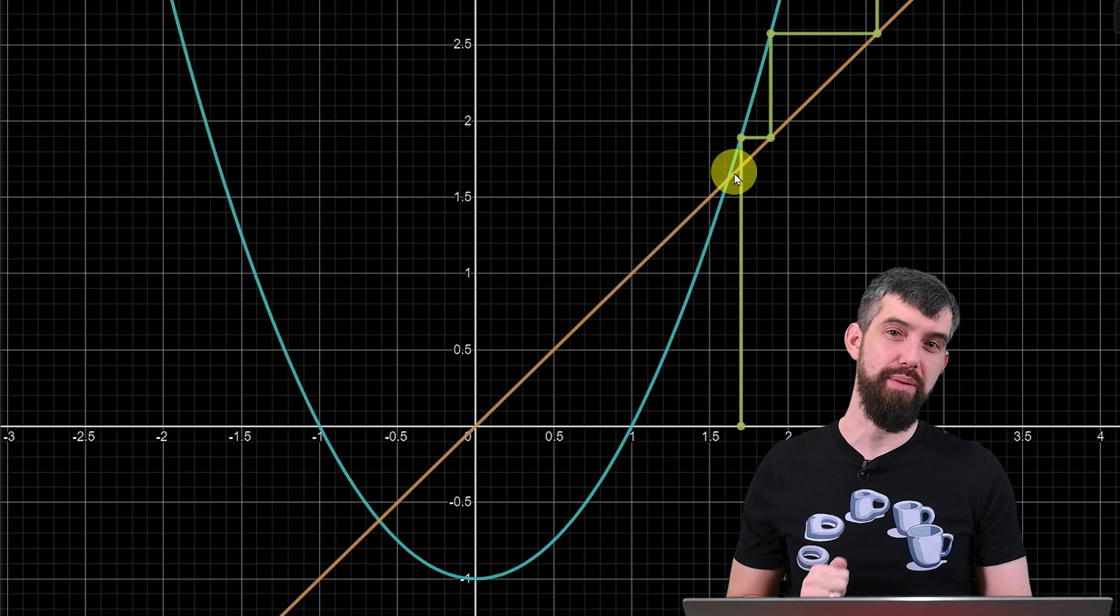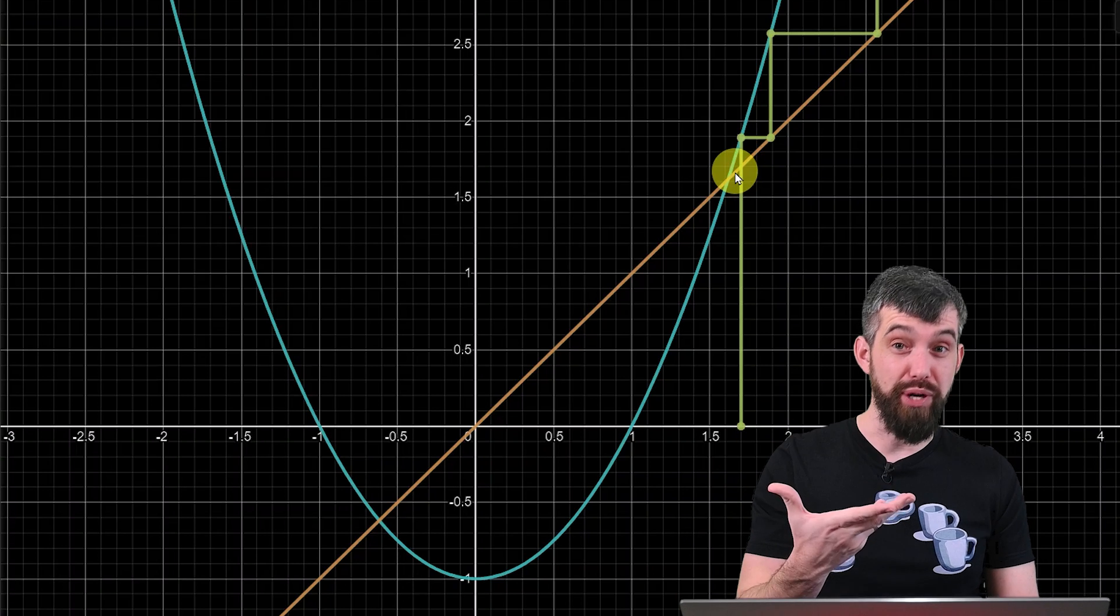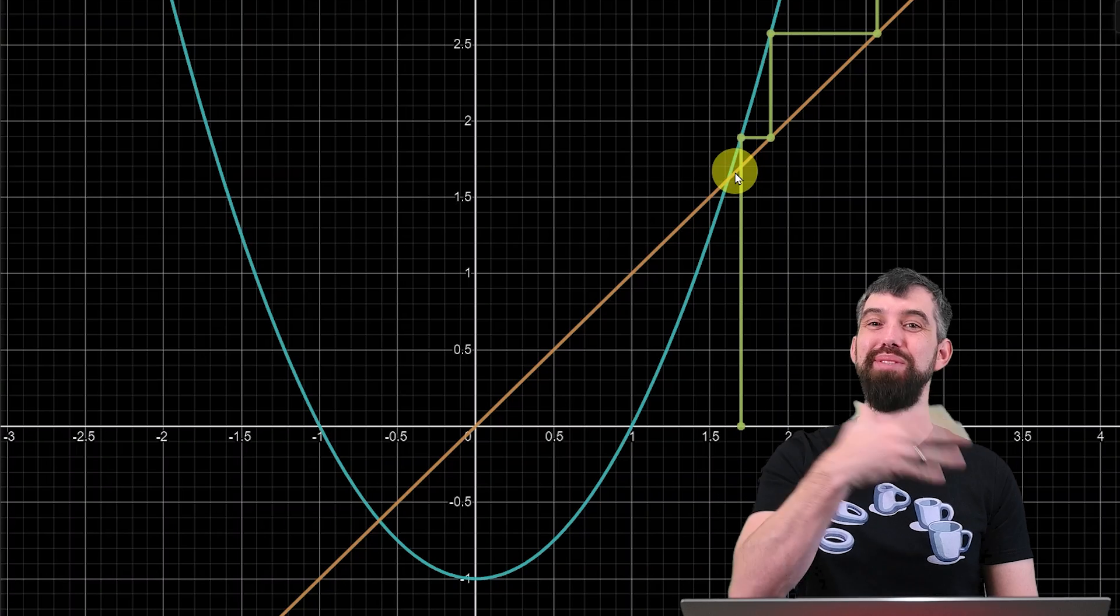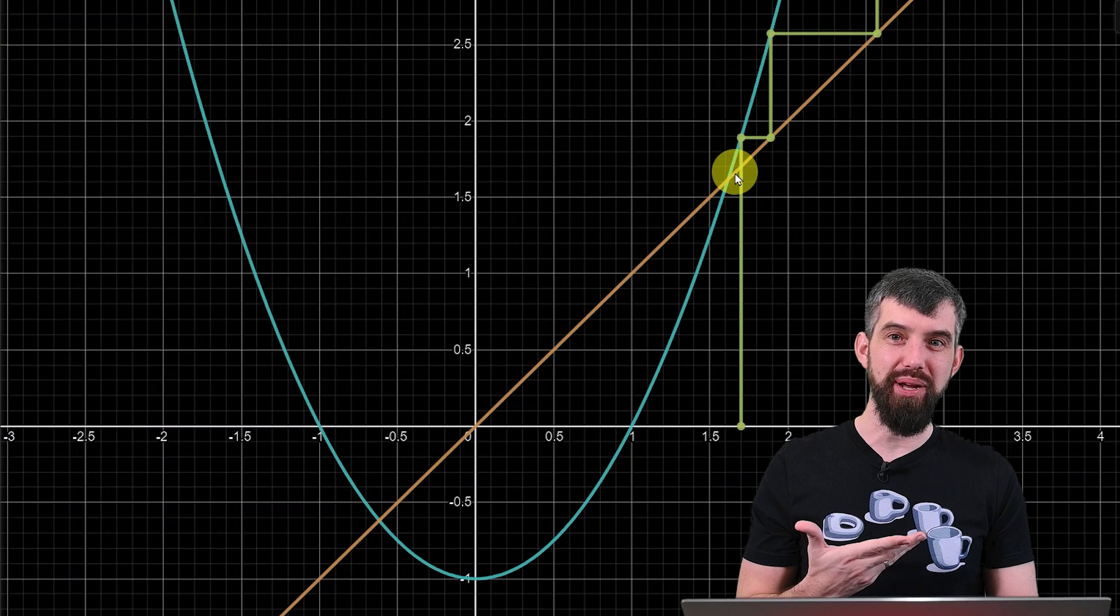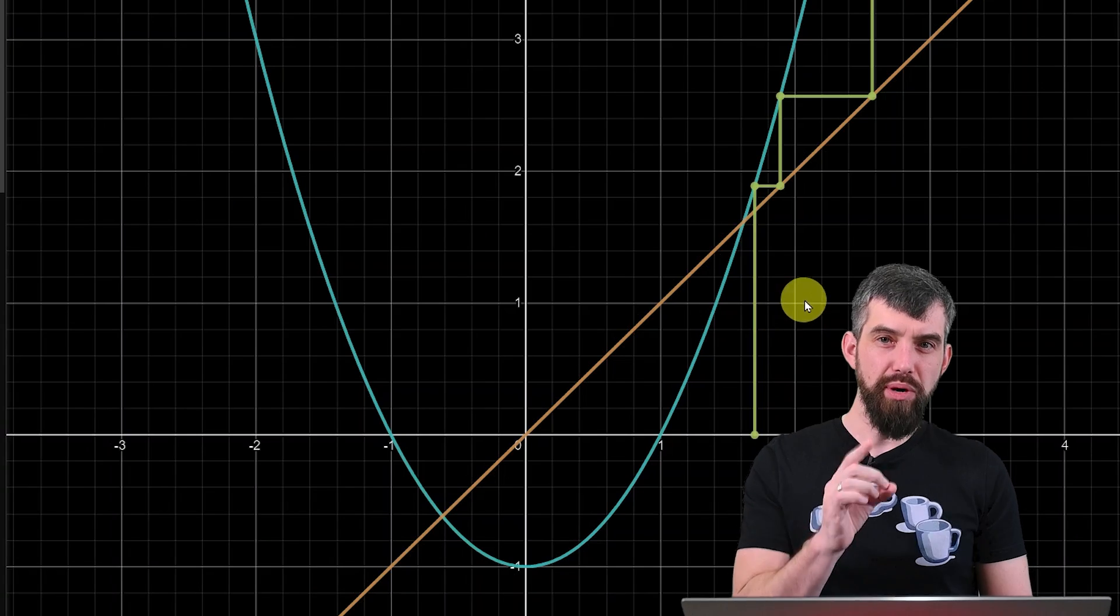So what is this cobweb diagram doing? The idea is that because the output of one term of a sequence is the input for the next, the output becomes the input, the output becomes the input, a way to alternate the output or the input is going to the line y equal to x, where the output and the input are the same. And the way it works is this.